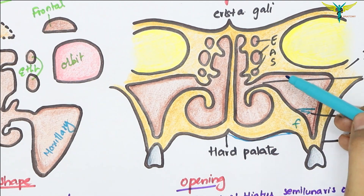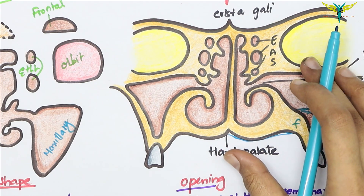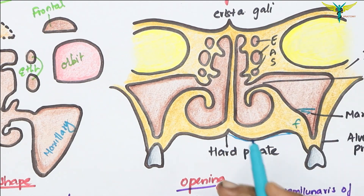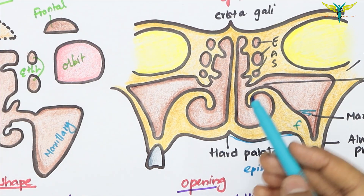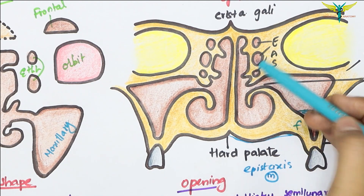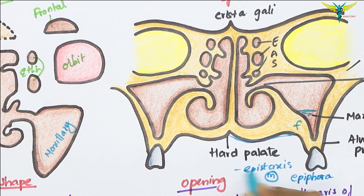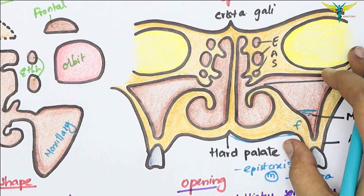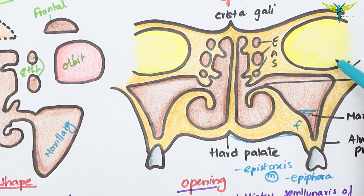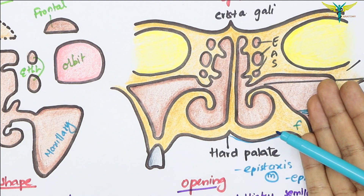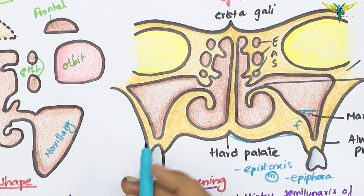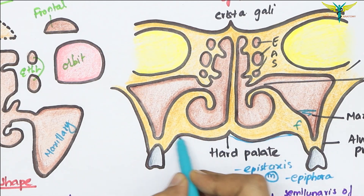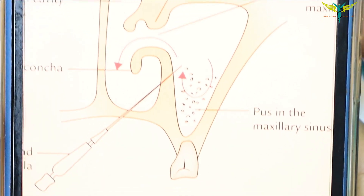The downward invasion causes bulging or ulceration of the palatal roof of the oral cavity. Medial invasion of the cancer causes obstruction of the nasal cavity and epistaxis — that is bleeding — and obstruction of the nasolacrimal duct produces epiphora, which is overflow of tears. Lateral invasion produces swelling on the face and a palpable mass in the gingivolabial fold. Backward or posterior invasion may involve the palatine nerves, leading to severe referred pain in the upper teeth.